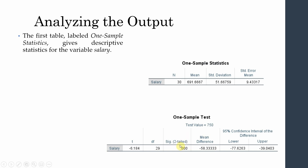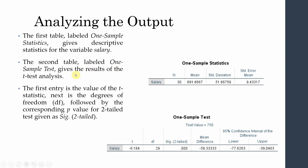The second table, One Sample Test, gives the results of the t-test analysis. The first entry is the t-test statistic, followed by degrees of freedom and the corresponding p-value for the two-tailed test. If the t-statistic is greater than 1.96, this indicates significant differences. The significance (two-tailed) value shown is 0.000, meaning there are significant differences between the sample mean and the population mean.